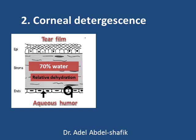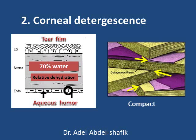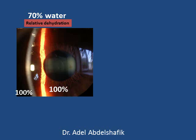The second factor for transparency is that the water content of the cornea is only 70%. This is a relative dehydration of the cornea compared to the tear film and the aqueous humor, both of which are almost 100% water. The cornea being only 70% water is important to keep the cornea transparent and to keep the layers compact.